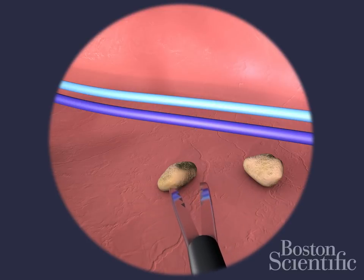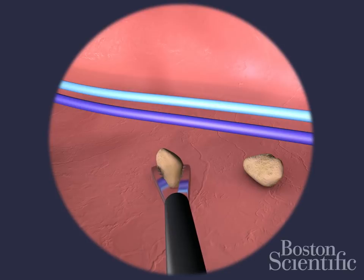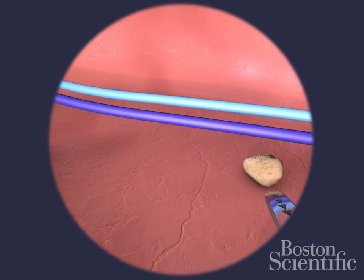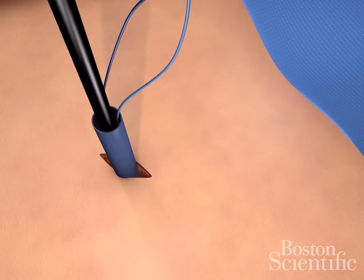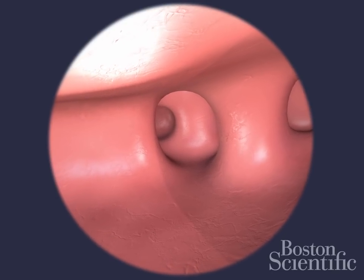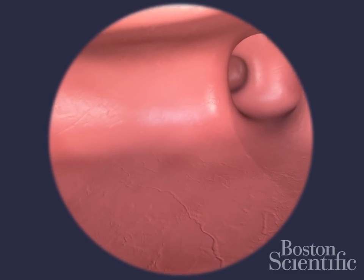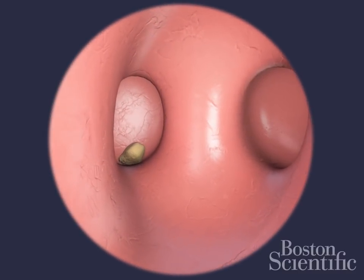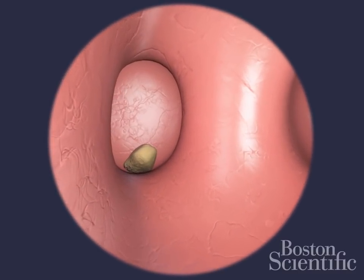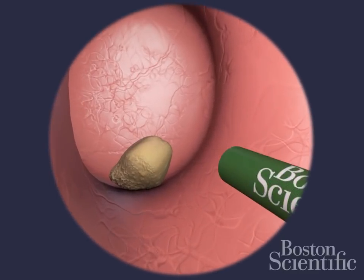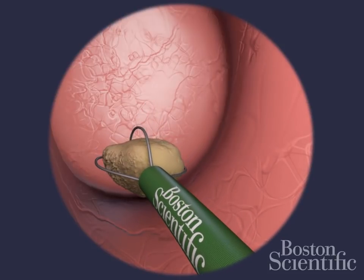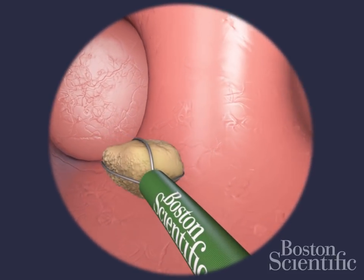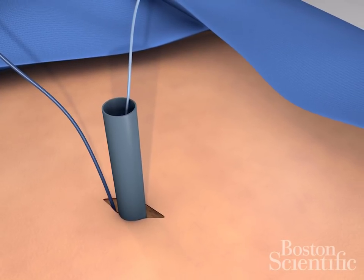Insert rigid graspers through the nephroscope to collect stones. Remove the stones and the scope. Insert the flexible cystoscope. Look for remaining stones in the calyces. Insert the basket into the scope to capture the stone. Remove the stone and cystoscope.